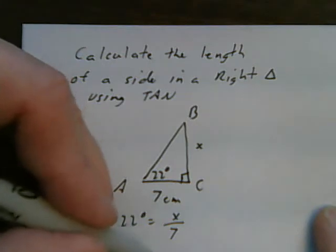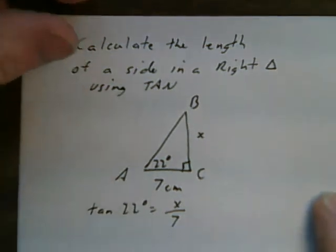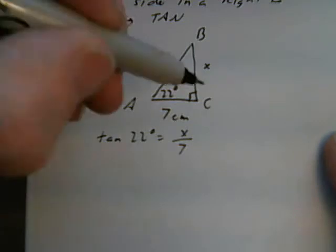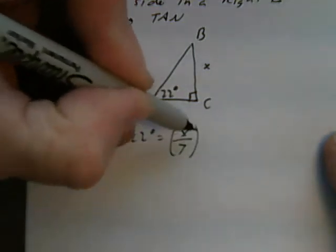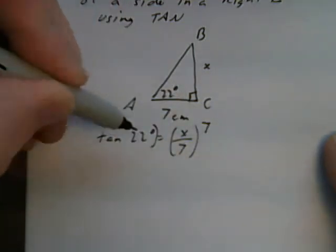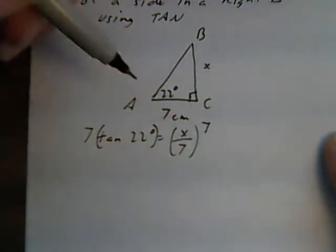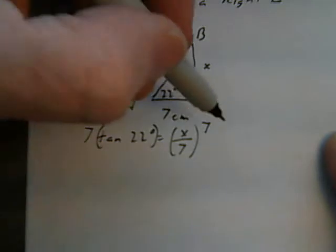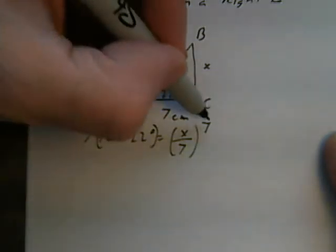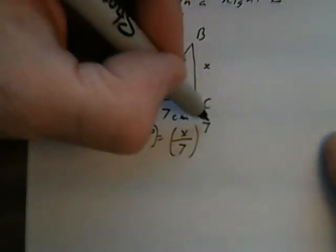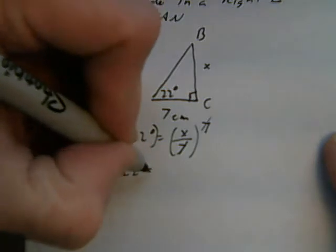I'd like to get rid of this 7 on the bottom. So to get rid of a 7 in your denominator, you multiply both sides by 7. Now, I keep the tan and the 22 together because that is one number. You can never separate a ratio expression from the angle that it's referring to. If you look at the right side, if I've got a 7 on top and a 7 on the bottom, they cancel out. So I'm left with 7 tan 22 equals X.